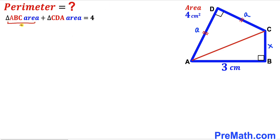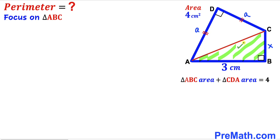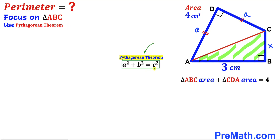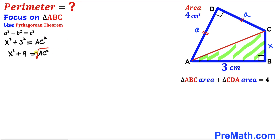Now let's focus on right triangle ABC and apply the Pythagorean theorem: a² + b² = c². Here AC is the hypotenuse and the two legs are 3 and x. Filling in, we get x² + 3² = AC², so AC = √(x² + 9). This is equation number one.